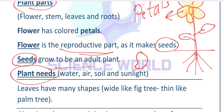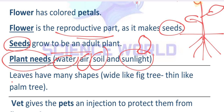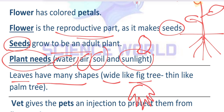This plant needs water, air, soil, and sunlight to grow. Now let's talk about leaves — leaves are like your hand; they make food for the plant, just like you cook using your hand. Leaves have many shapes: some are wide, like a fig tree, and some are very thin, like a palm tree.